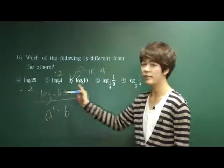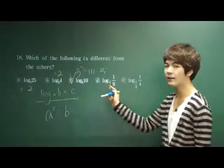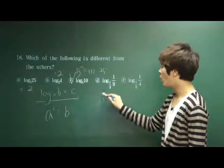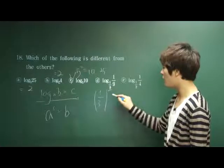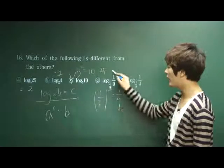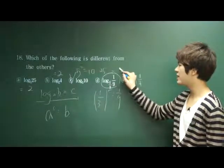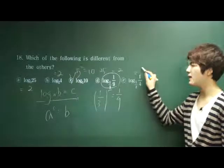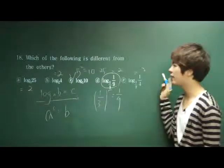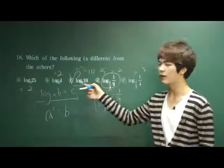Comparing to the other answer choices, let's verify by looking at answer choice D. 1 over 3 to the second power is equal to 1 over 9, so the answer for D is 2 as well, and E is 2 as well. Therefore, the answer has got to be C — the only different one from the others.